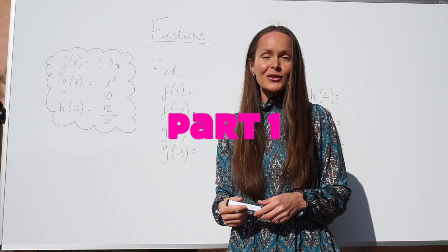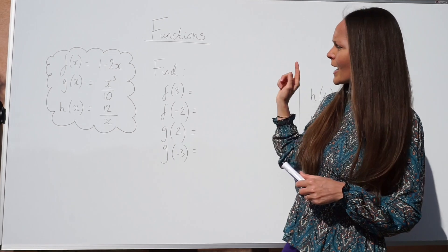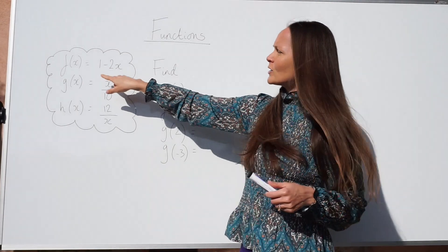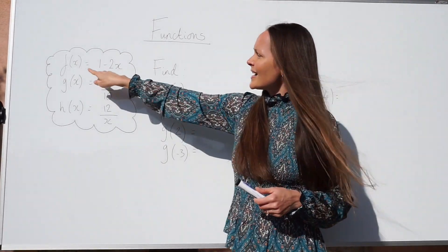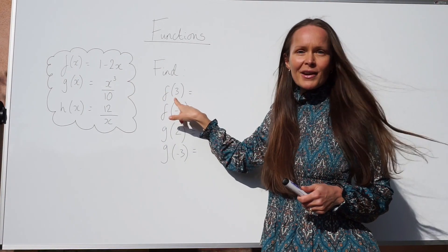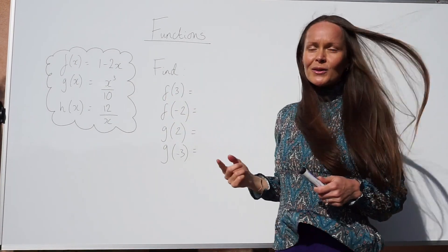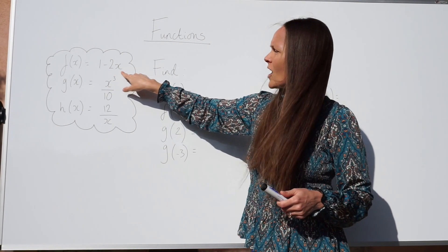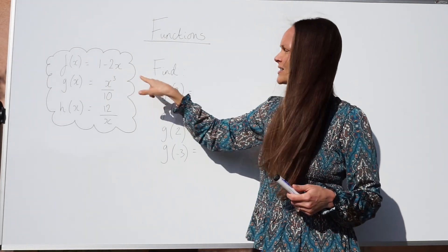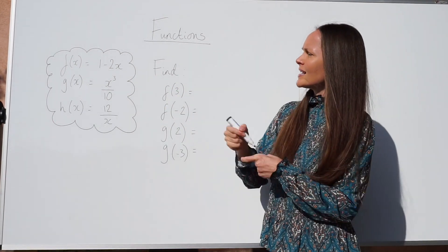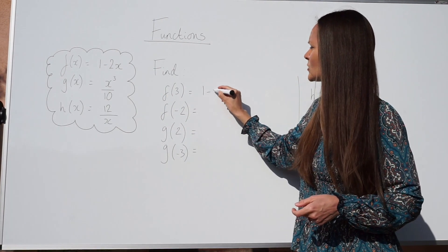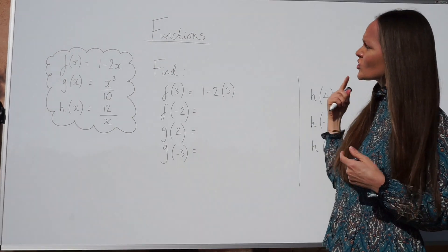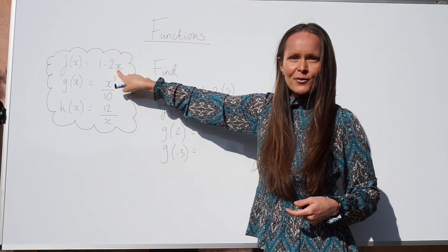For the first few questions, we're just going to be using a method called substitution. For the first one, we have to work out f of 3. If you compare this with the function f of x, you can see the letter x has changed to the number 3. What you need to do is substitute that number 3 into this function — you replace the letter x with the number 3, so instead of writing 1 minus 2x, I'm going to write 1 minus 2 brackets 3.